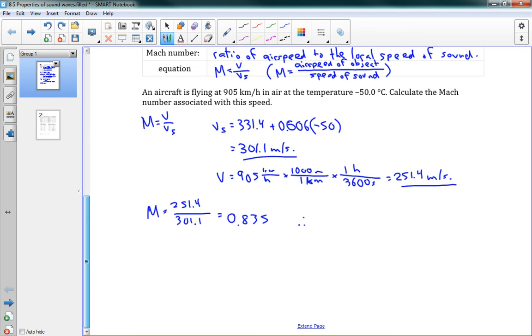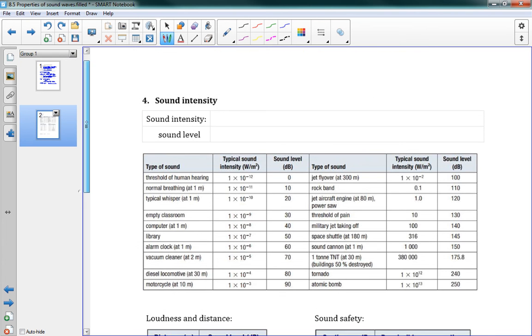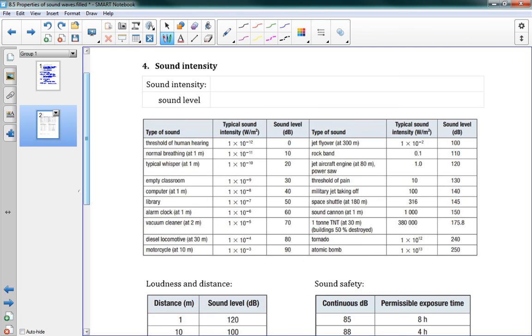Therefore, the Mach number is 0.835. Which means that they're going 83.5% of the speed of sound. Not quite Mach 1. That's how those problems work. On the next page, there's a lot of information here. And we're not actually going to do too much with that information.